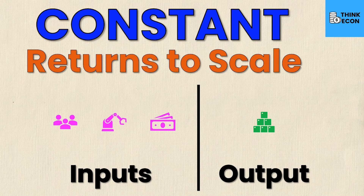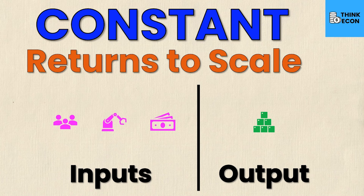Here you'll see I have my inputs on the left and my outputs on the right. I have labor, physical capital, and monetary capital as my inputs, and then I have my output which in this case is just a generic product. Constant returns to scale occur when proportional increases in all of the inputs result in an exactly proportional increase in output. In other words, if you double the inputs the output will also double, and the total output scales up at a constant rate relative to the increase in inputs.